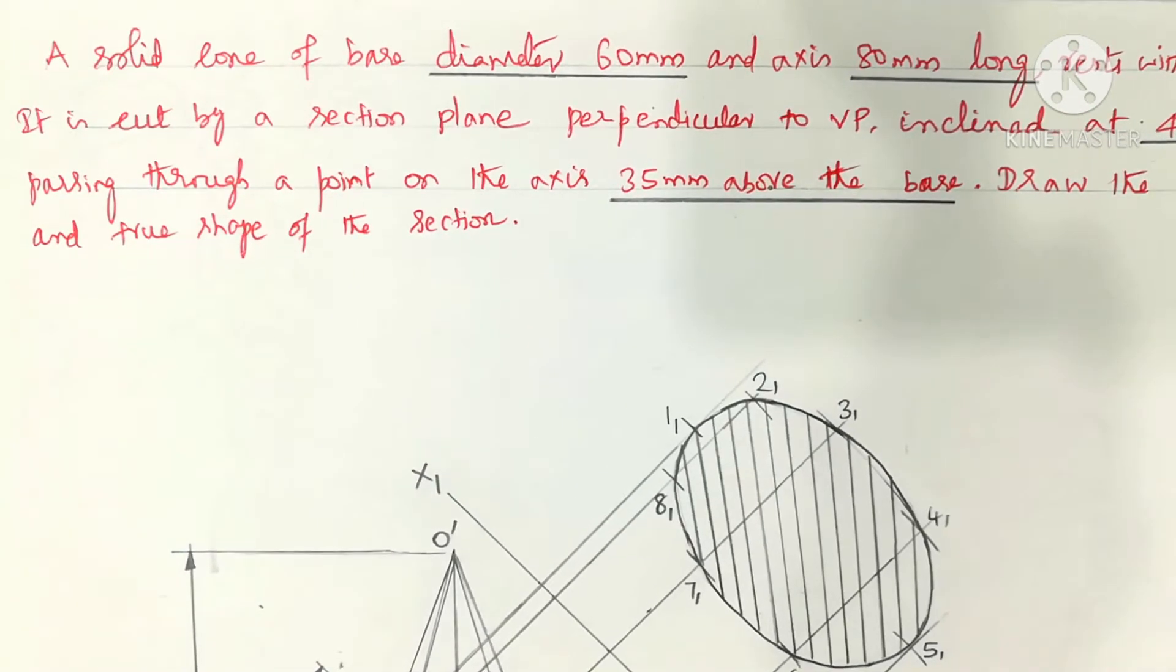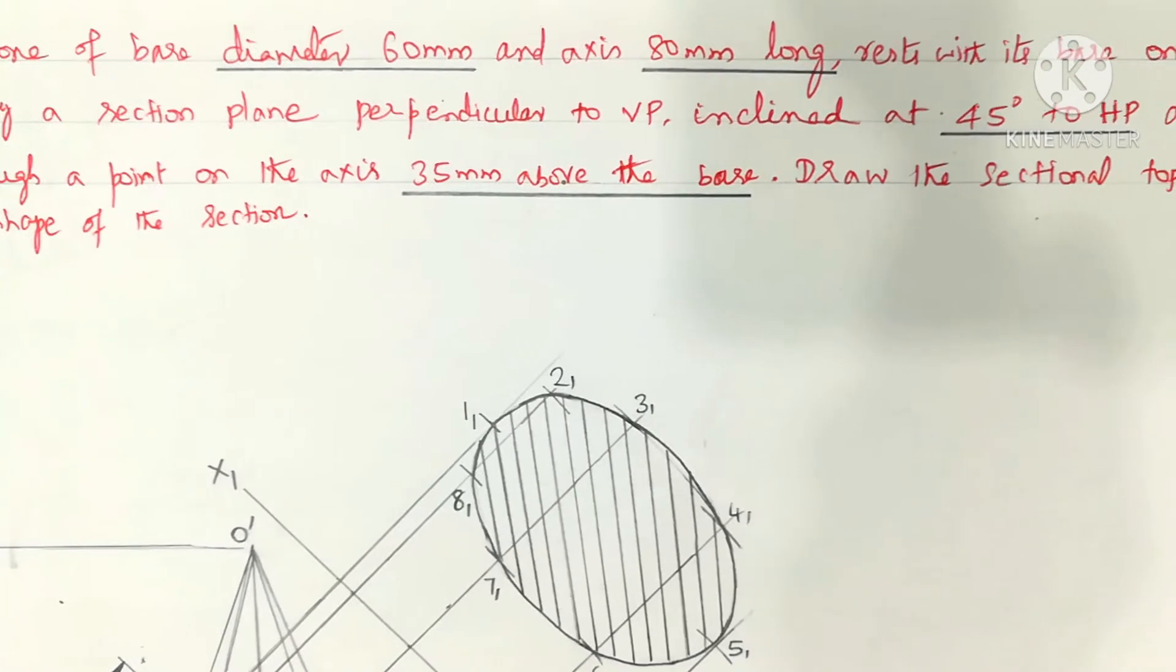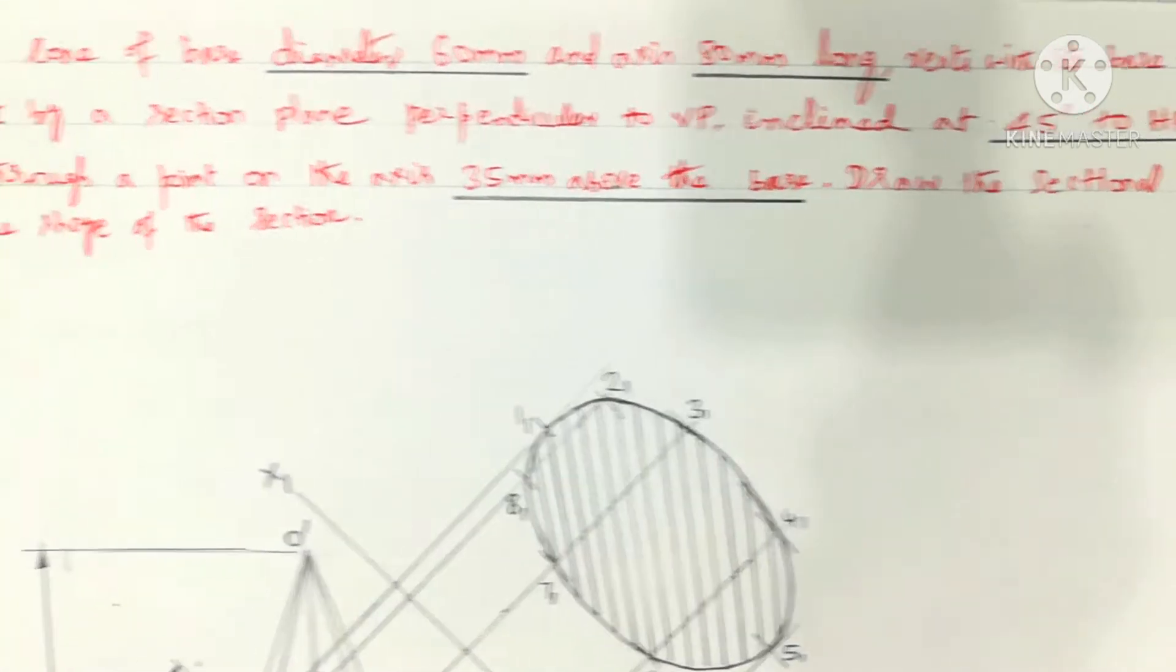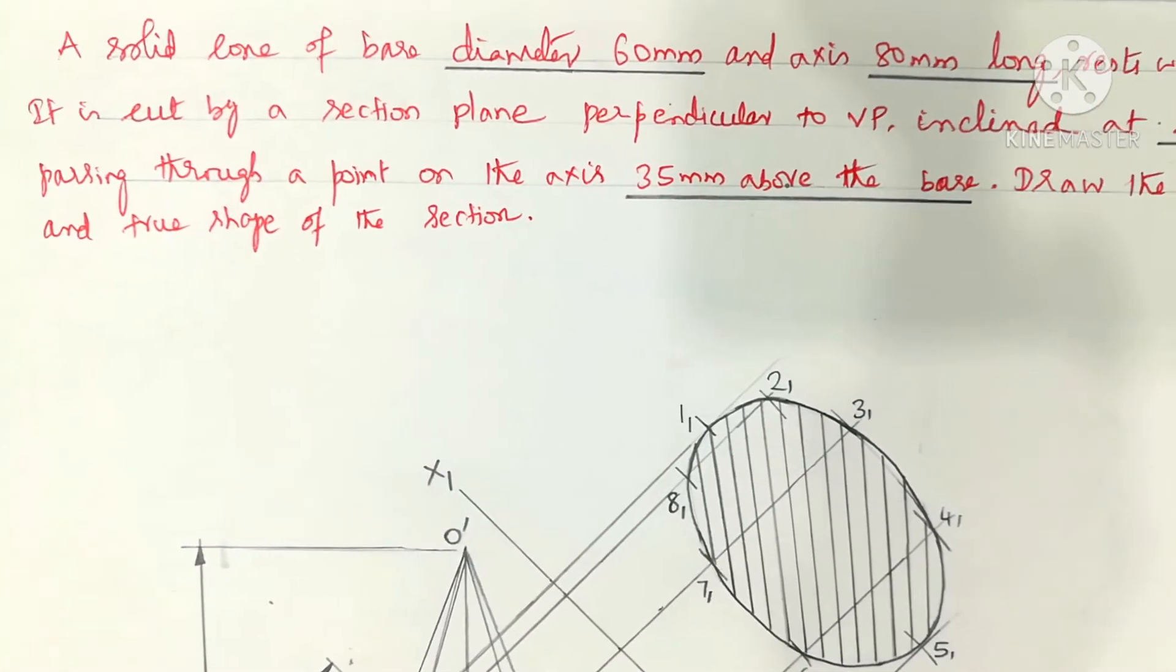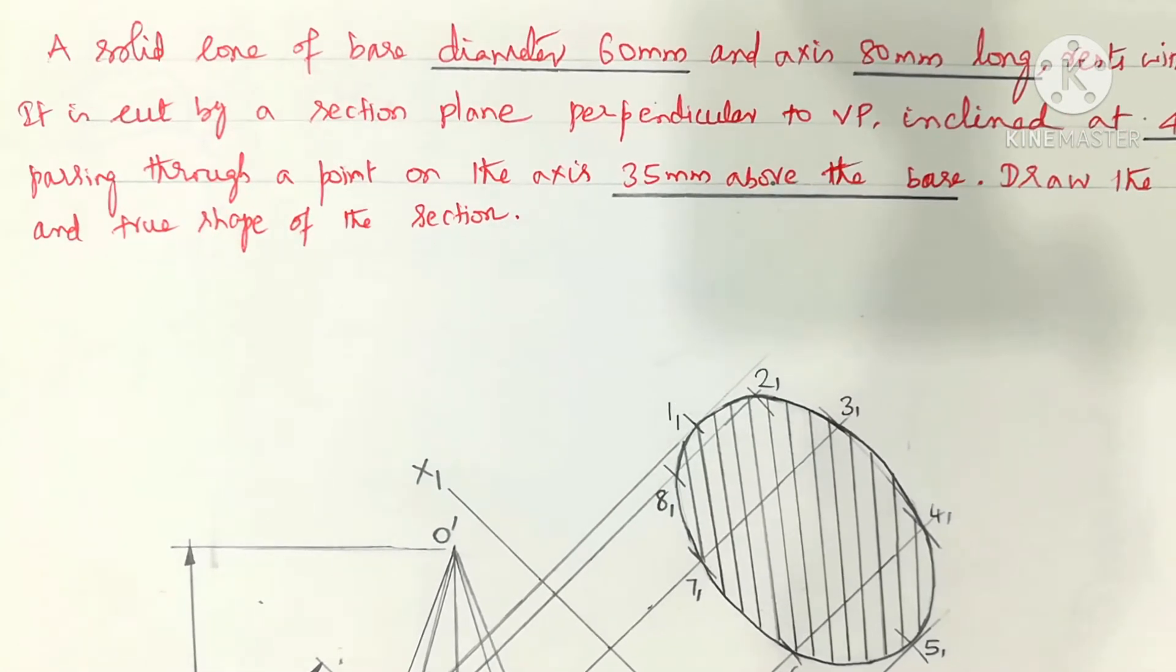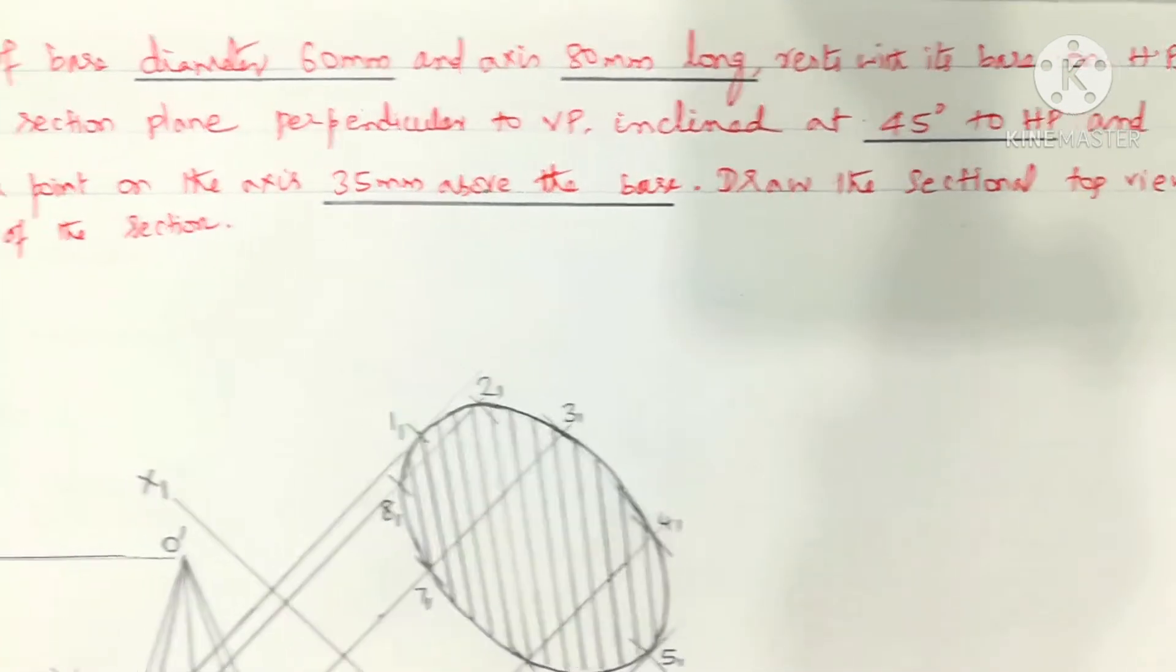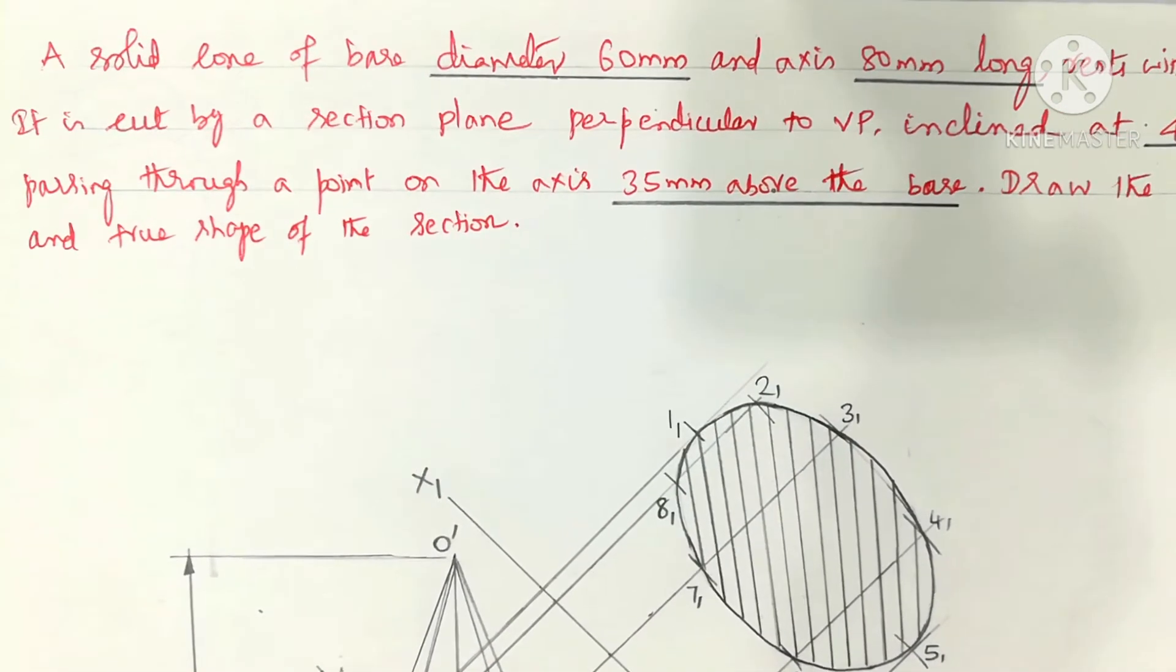It is cut by a section plane (also called cutting plane) perpendicular to the VP, inclined at 45 degrees to the HP, and passing through a point on the axis 35 mm above the base. Draw the sectional top view and true shape of the section.